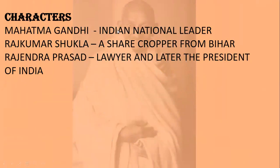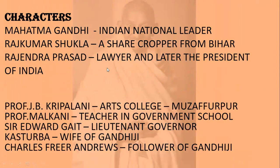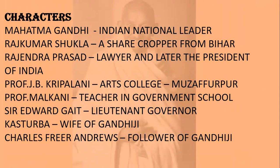Characters: Mahatma Gandhi, Indian national leader; Raj Kumar Shukla, a sharecropper from Bihar; Rajendra Prasad, lawyer and later the President of India; Professor JB Kripalani from Arts College, Muzaffarpur; Professor Malkani, a teacher in a government school; Sir Edward Gate, Lieutenant Governor; Kasturba, wife of Gandhi; and Charles Freer Andrews, follower of Gandhi.